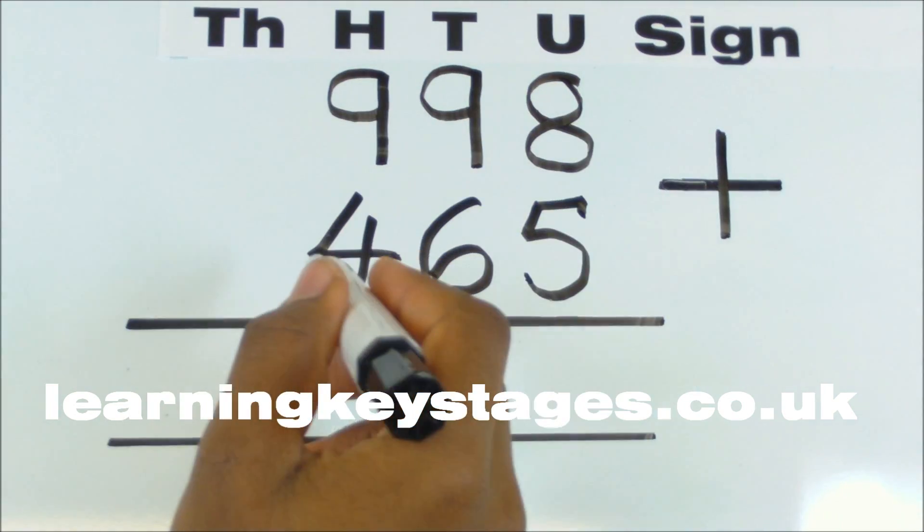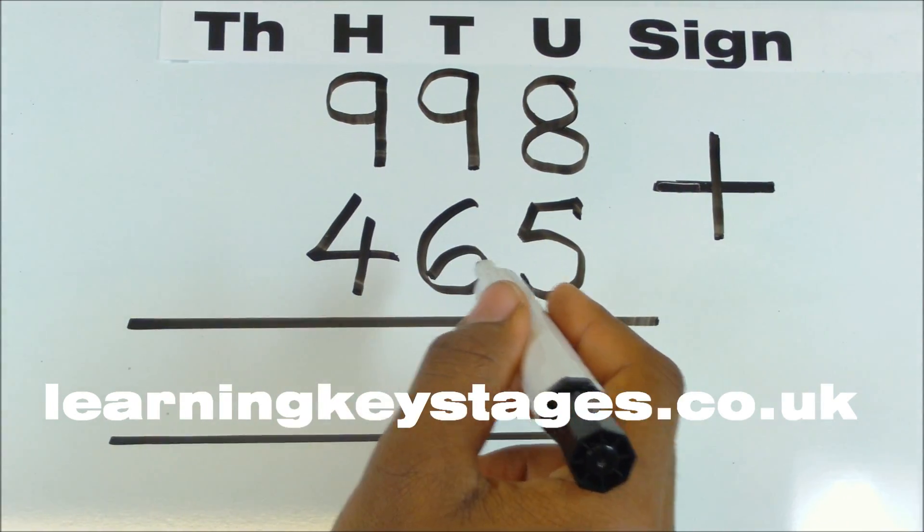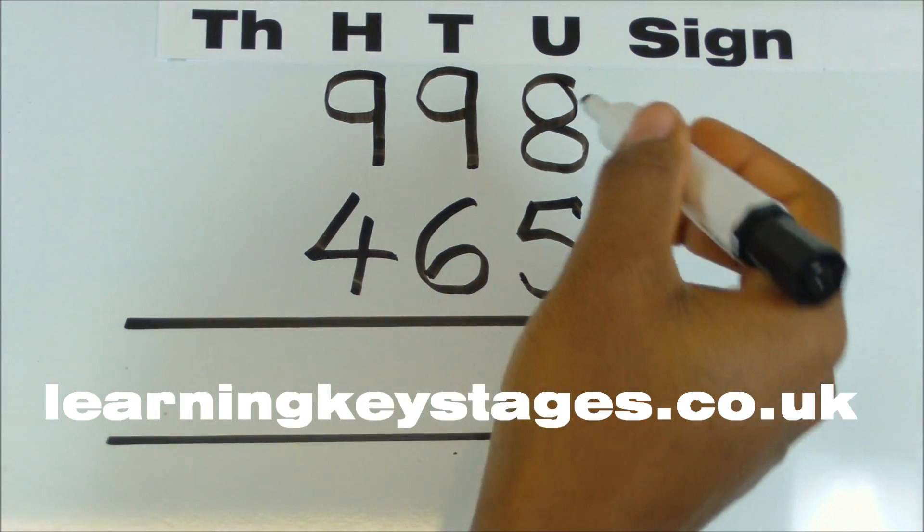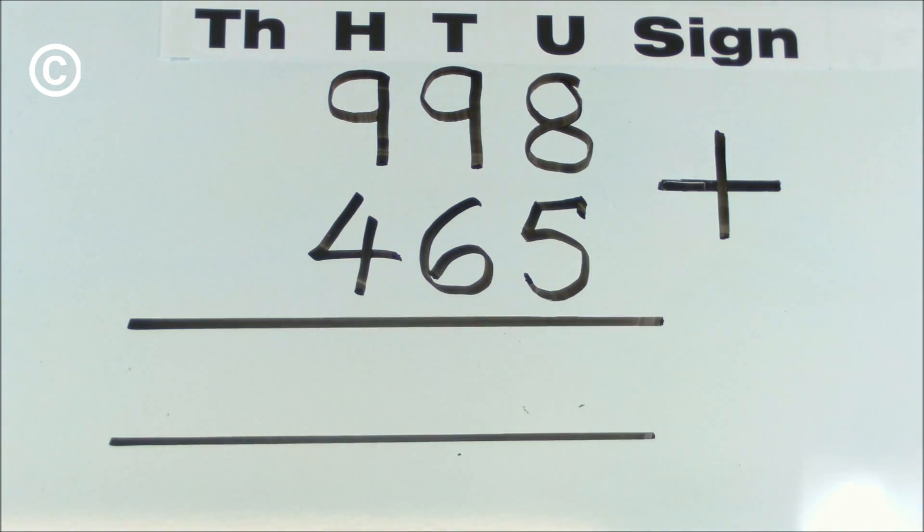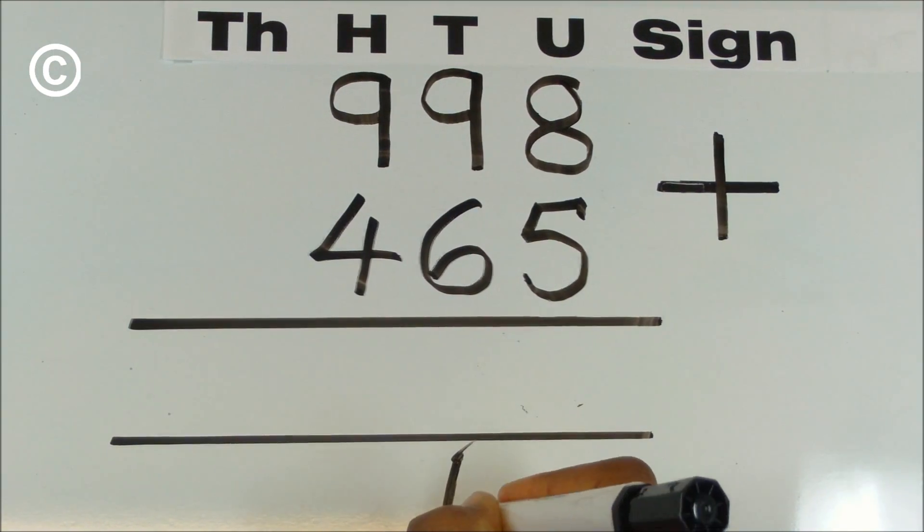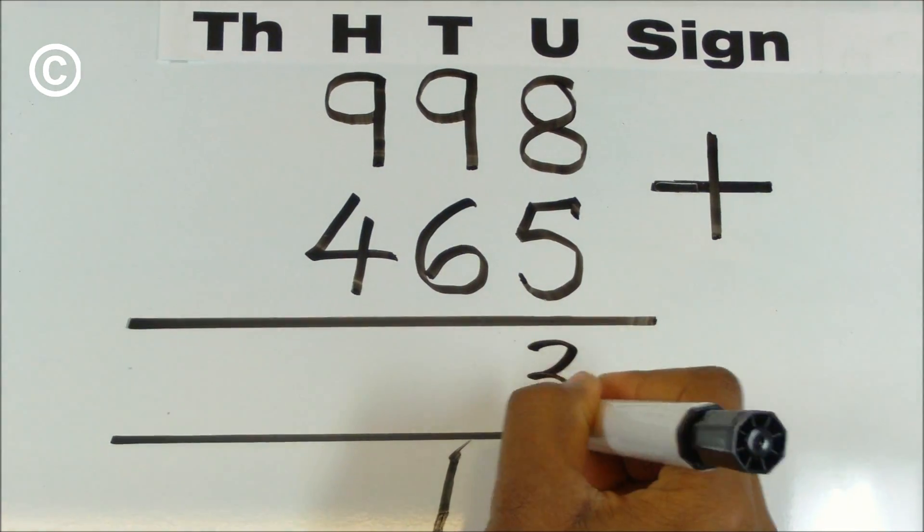998 add 465. 8 plus 5 is equal to 13. So you carry the 1 here and 3 in the units column.